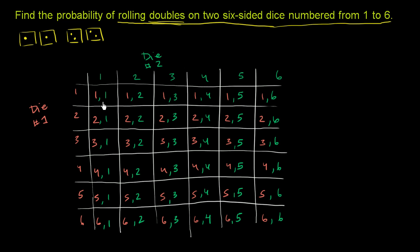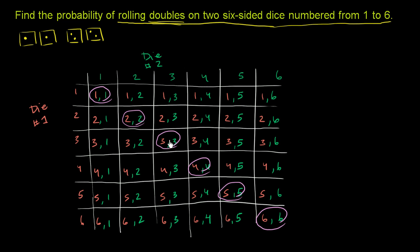We see them right here. Doubles — that's rolling a 1 and a 1, a 2 and a 2, a 3 and a 3, a 4 and a 4, a 5 and a 5, and a 6 and a 6. So we have 1, 2, 3, 4, 5, 6 outcomes that satisfy this event — these are the outcomes consistent with rolling doubles.